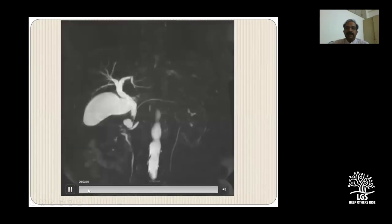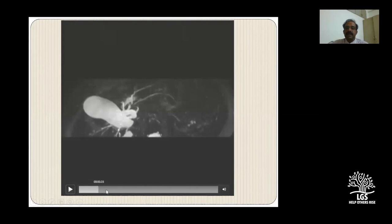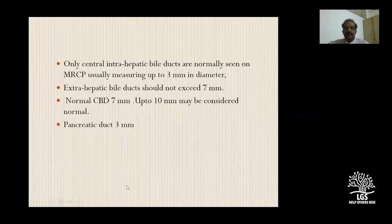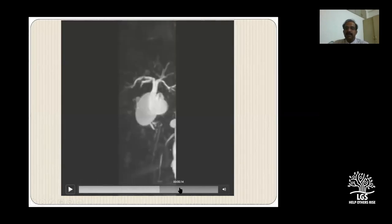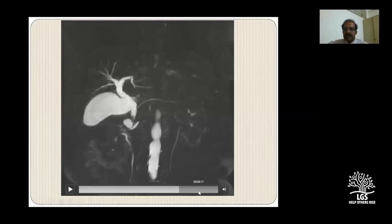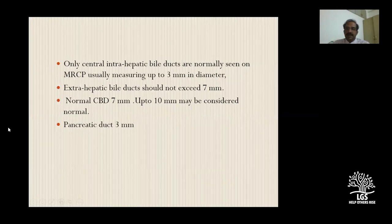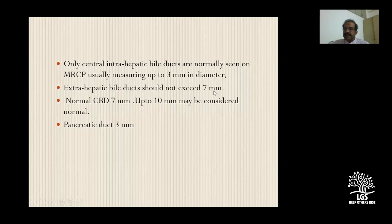We have the ability to project images in different angles. When you come to the radiology department you can go through these images dynamically, which helps in planning and gives better orientation of the abnormalities - rather than just seeing them on films alone. On a normal MRCP, the CBD up to 7mm is considered normal, though up to 10mm may be acceptable depending on age. Extrahepatic biliary ducts should not exceed 7mm. The central intrahepatic biliary ducts are seen up to around 3mm in diameter, and the pancreatic duct is around 3mm.